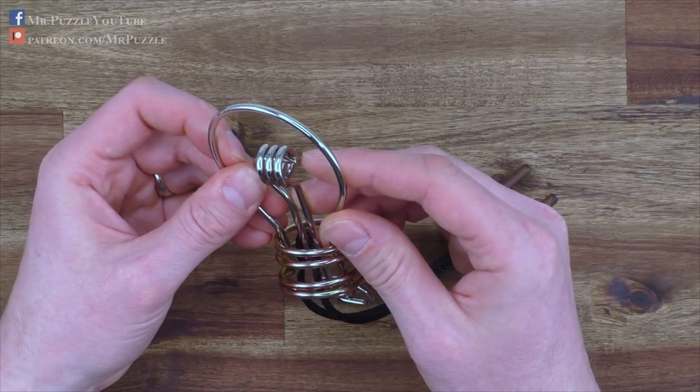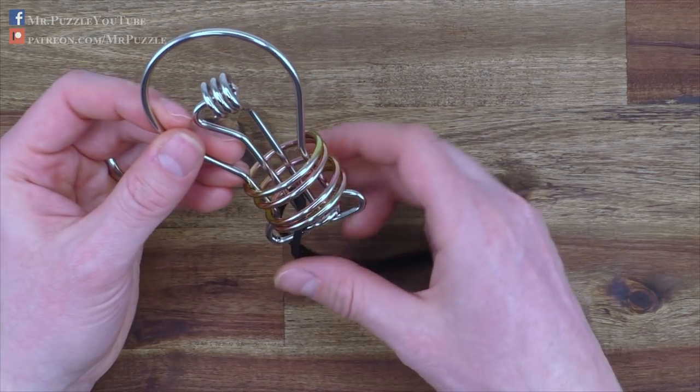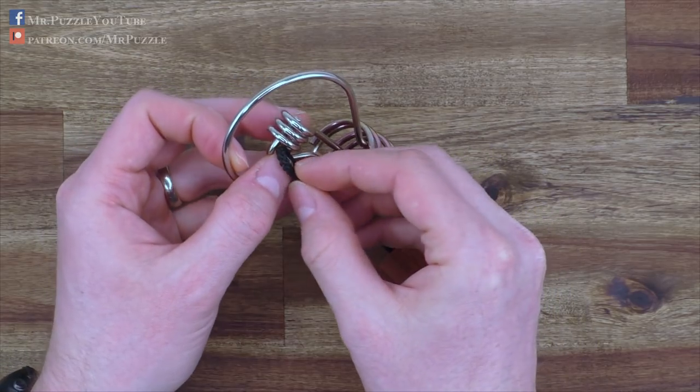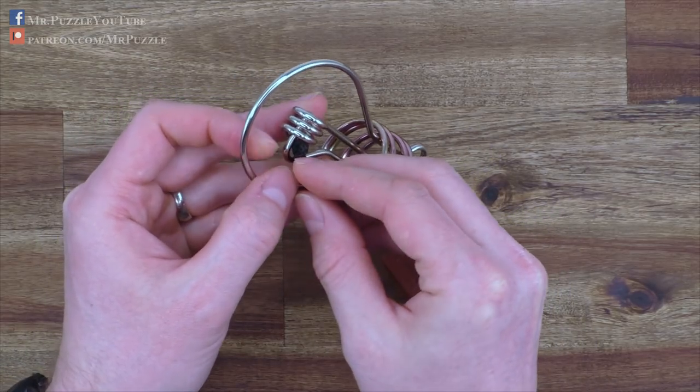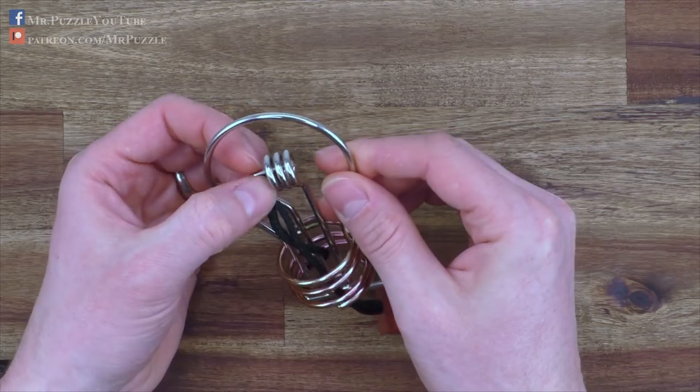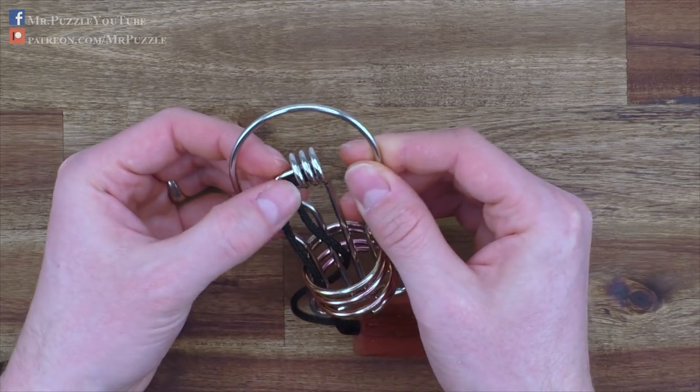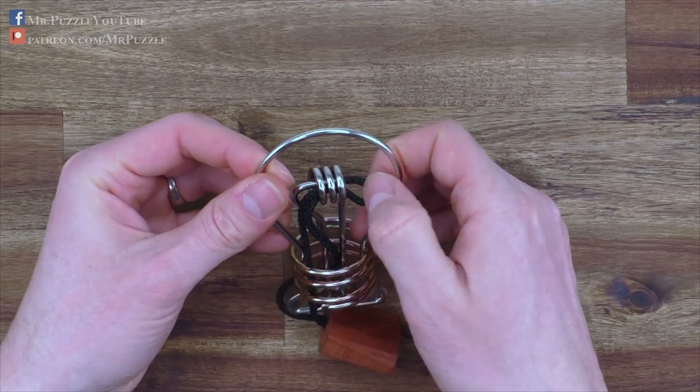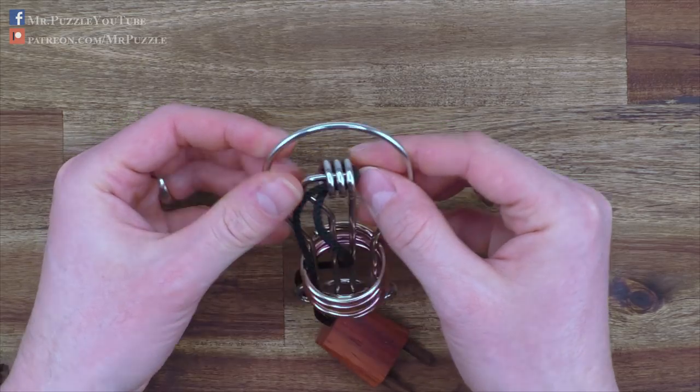So we move it up, we move it through here, through this tube or this spring, over here, and then we move it around the wire and pull it back.